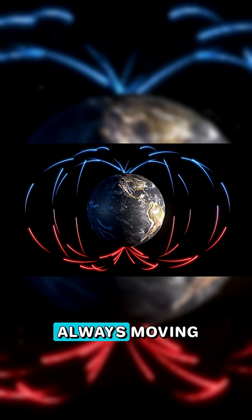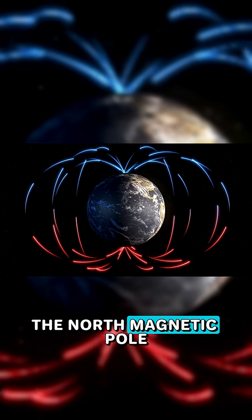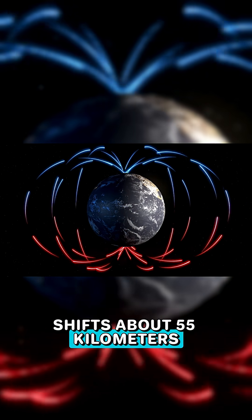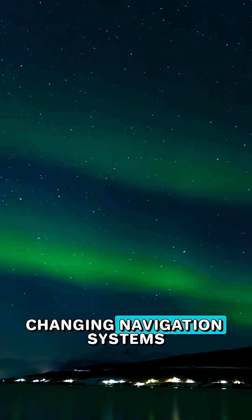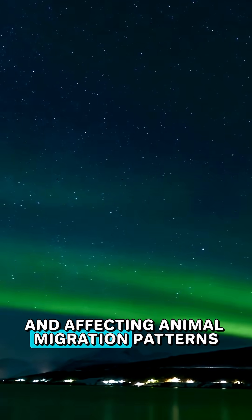Earth's magnetic field is always moving. The North Magnetic Pole shifts about 55 kilometers every year, changing navigation systems and affecting animal migration patterns.